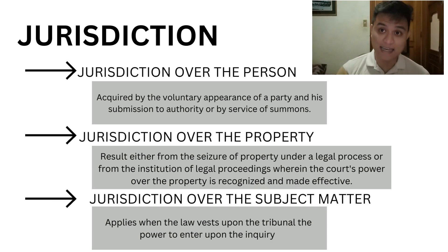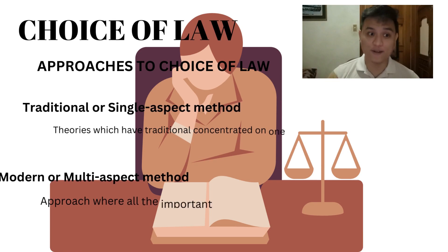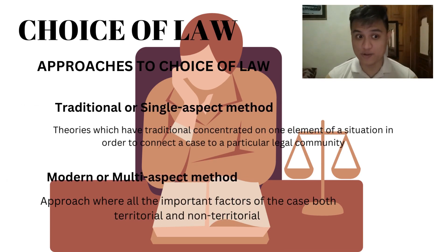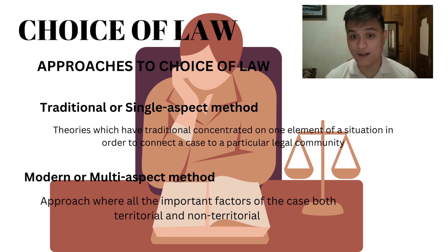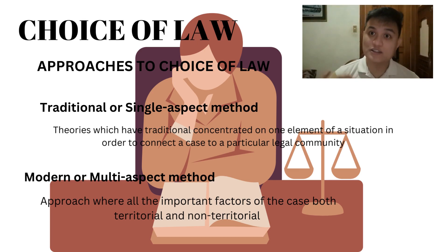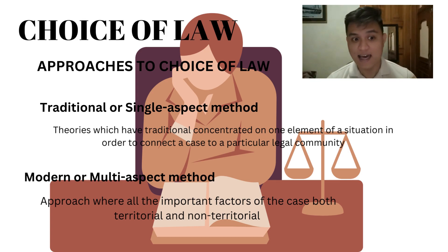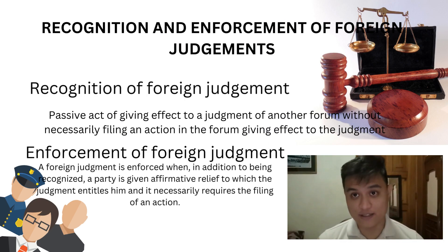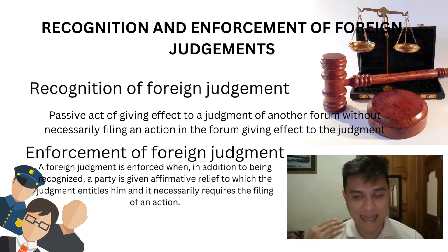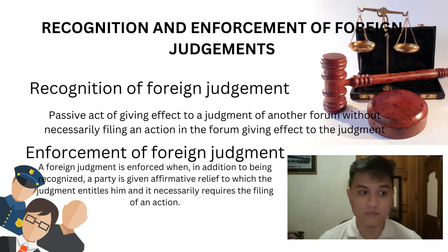Moving forward to the second phase of Conflict of Laws, it would be the choice of law itself. There are two approaches. The first one would be a single aspect method, which concentrates on one element of a situation in order to connect a case to a particular legal community. The second is a multi-aspect method, an approach where all important factors of the case, both territorial and non-territorial, are analyzed and the applicable law is eventually discerned. This brings us to the third phase of Conflict of Laws, which would be the recognition and enforcement of foreign judgments. A recognition of foreign judgment is a passive act of giving effect to a judgment of another forum without filing an action in the forum giving effect to the judgment.